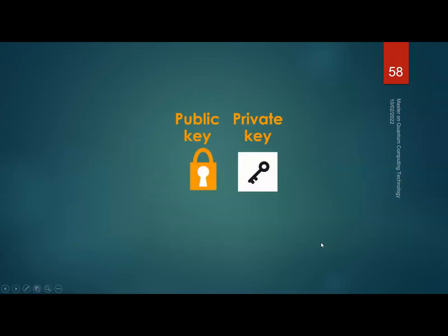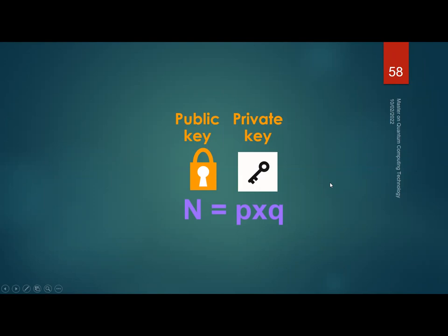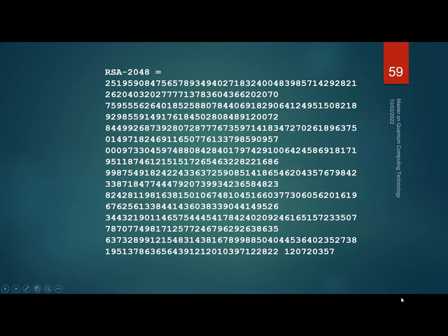A simplistic way to think about it: breaking the padlock means finding two prime numbers by trial and error through all possible combinations. When n is sufficiently large, this is not feasible with current technology. An RSA key of 2048 bits is a very long number indeed.